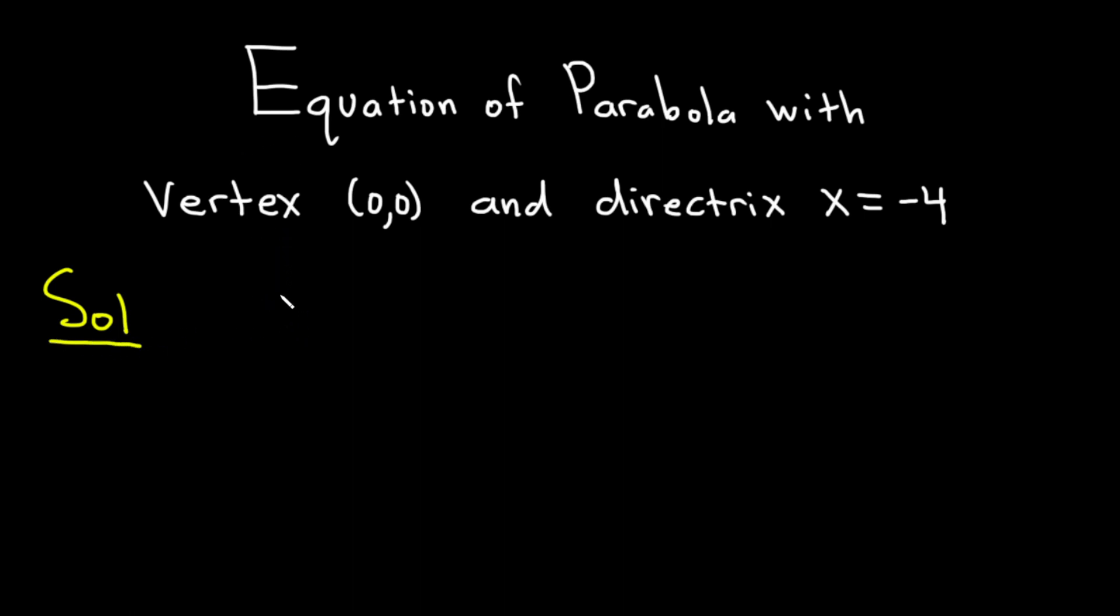With problems like these, I like to start by doing a quick sketch of the information that's given. And from the sketch, we can usually figure out what to do in the problem. So here we have the x-axis and the y-axis. And we know that the vertex is (0,0). So that's going to be right here at the origin.